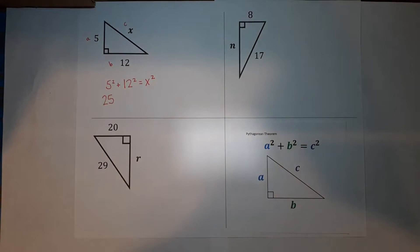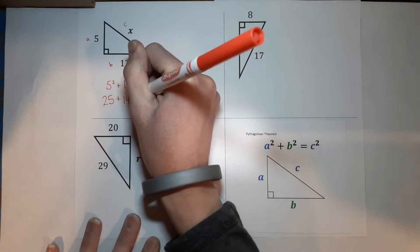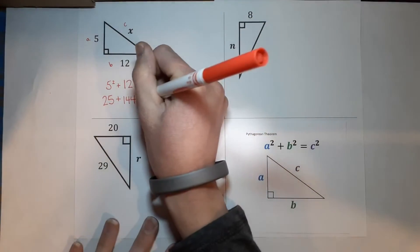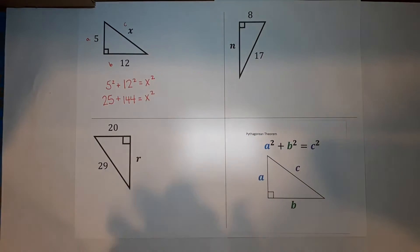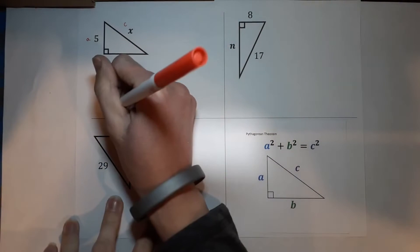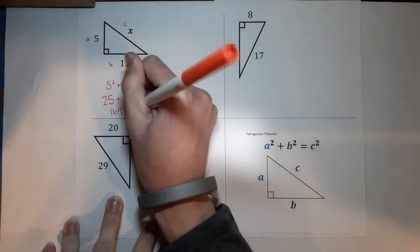Now we've got 12 squared, which is 144. That's 12 times 12. And this is equal to X squared. Not too bad so far, right? Now we just need to add these two. 25 plus 144 gives me 169. And that is equal to X squared.